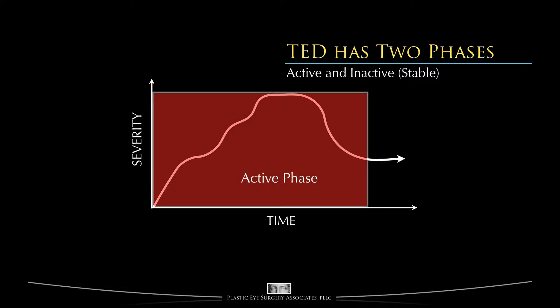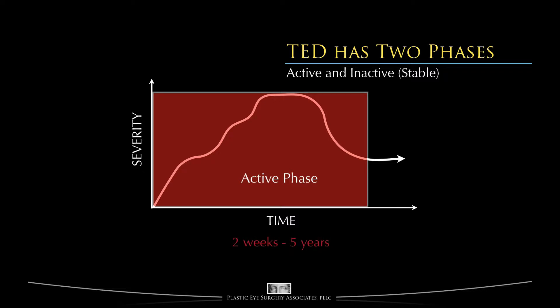We call the changing period the active phase, and in our experience this phase lasts an average of 18 months. However, the phase duration is quite variable from person to person. We've seen the active phase end in two weeks, but we've also seen it last as long as five years. Notice that there is often improvement toward the end of the active phase, so the active phase does not necessarily mean constant worsening of the disease — it simply means change.